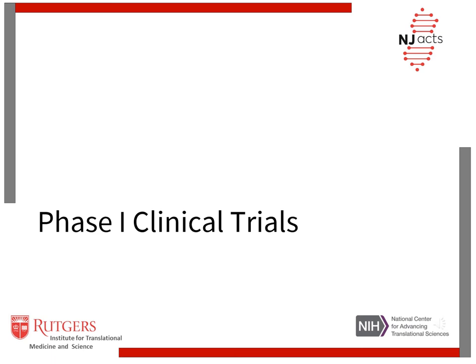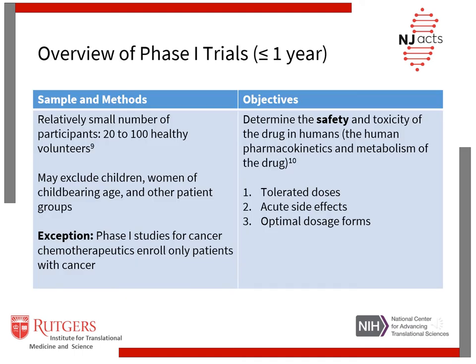Now we will discuss the tenets of phase 1 clinical trials. During phase 1 studies, researchers test a new drug in a relatively small number of participants, around 20 to 100 healthy volunteers. These trials may exclude children, women of childbearing age, and other more vulnerable patient groups. An important exception is that phase 1 studies for cancer chemotherapeutics enroll only patients with cancer. The main objectives of phase 1 trials are to determine the safety and toxicity of the drug in humans, including tolerated doses, any acute side effects, and optimal dosage forms. All of this information is important to the design of phase 2 studies.